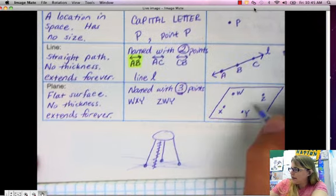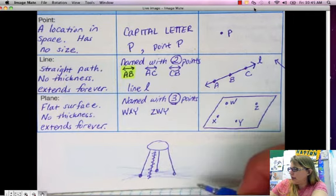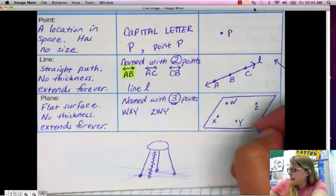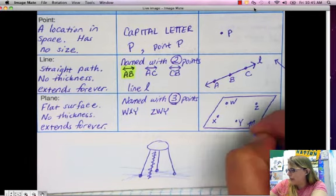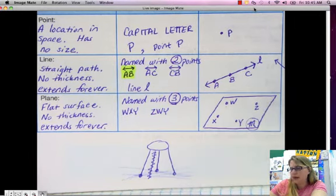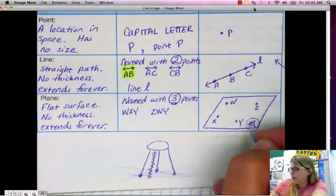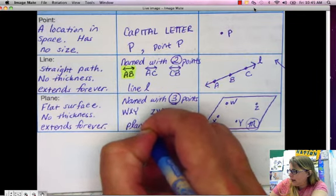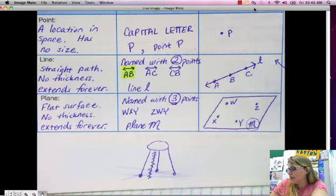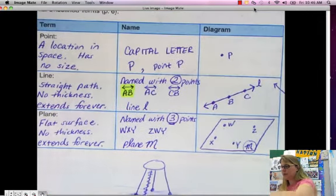One more thing. You know how this line up here had a little lowercase letter L and sometimes you could call it line L? Sometimes a plane will have like an uppercase cursive letter in the corner and if that's the case then you can call it by that uppercase cursive letter. So we would call this also plane M and it's usually a cursive letter. Okay so that's points, lines and planes so let's move on.